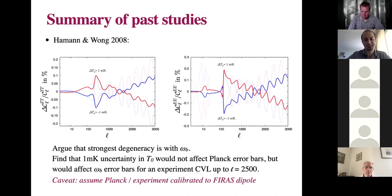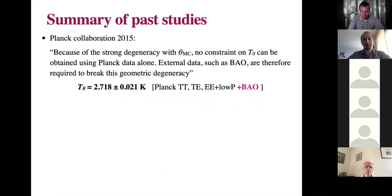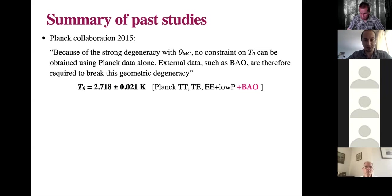A caveat in this work is that they implicitly make the same error as we did in terms of calibration — they assume explicitly that Planck or their experiment is calibrated to the FIRAS dipole, and I will go back to this later. The Planck collaboration in 2015 has a subsection on the variation of T0, and what they conclude is that because of the strong degeneracy with theta_MC — which is an approximation for the angular scale of the sound horizon — no constraint on T0 can be obtained using Planck data alone. External datasets such as BAOs are therefore required to break this geometric degeneracy, and they measure T0 from Planck plus BAO, finding it consistent with the FIRAS value.